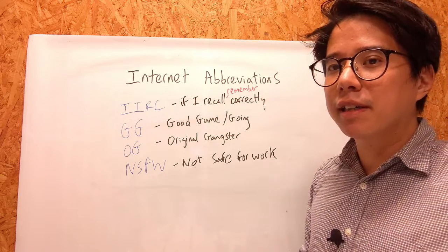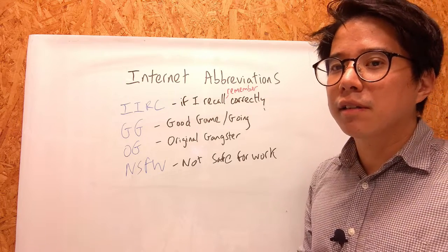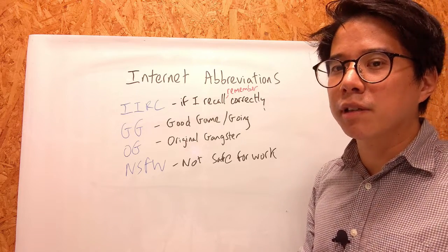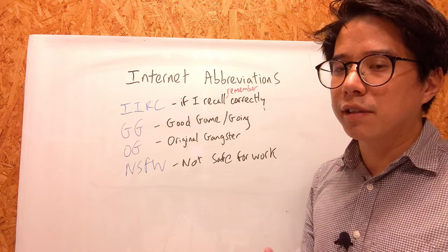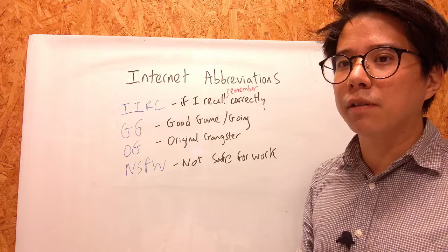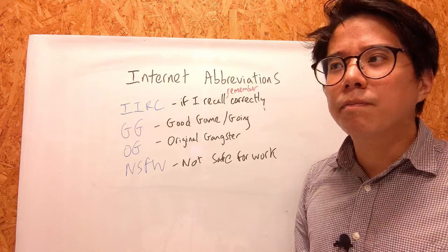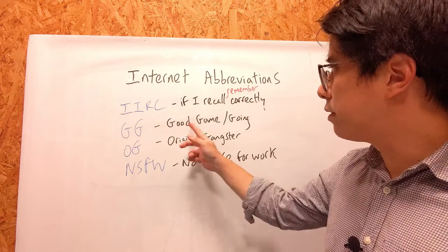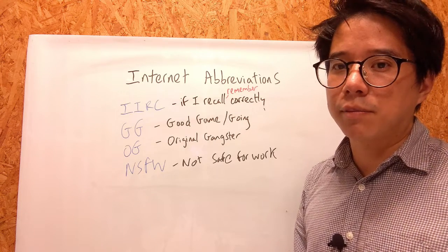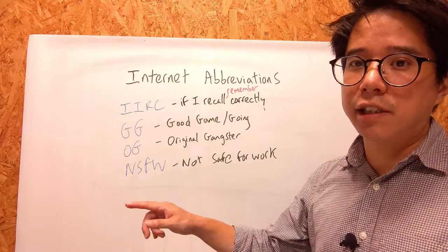Next is GG, which stands for good game or good going. I've seen this a lot on internet games — for example, I'm a chess player and I've been playing internet chess. After the game the person you've played with may put GG, which is a nice way to say thanks, that was fun. I've also seen GG on social media like Twitter, where it has more of the meaning of good going — like that was good, well done. So if you read about something interesting someone has done or an achievement they've got, you could reply GG, meaning well done, good going.